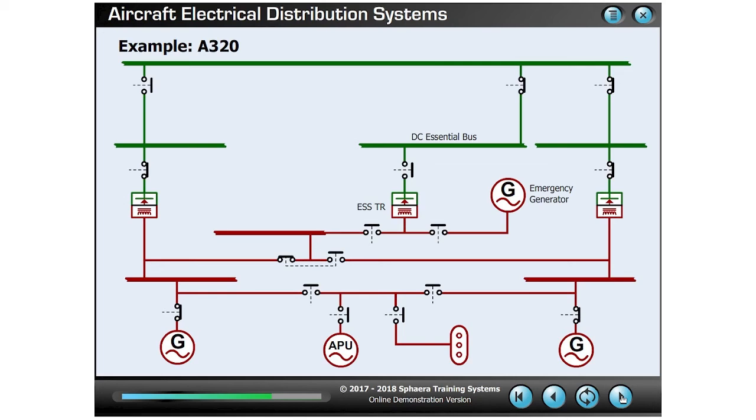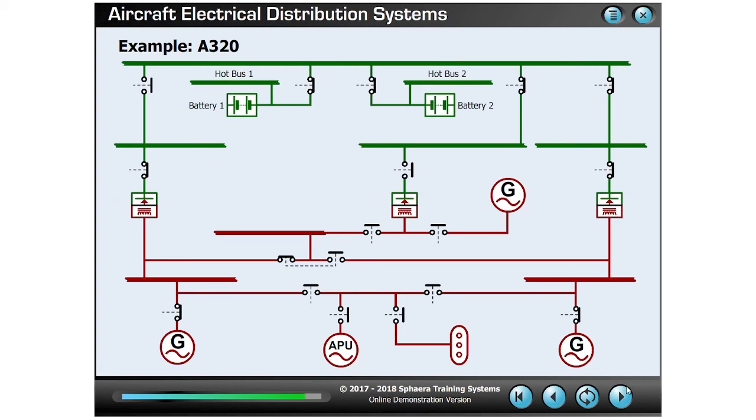Now let's look at the two batteries. As you can see, these are charged from the DC battery bus. There are two busbars permanently connected to the batteries, known as Hot Bus 1 and Hot Bus 2.